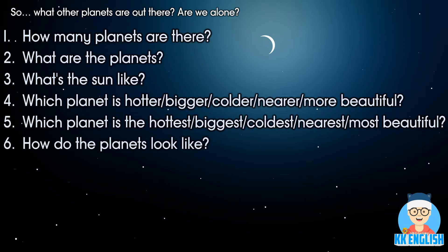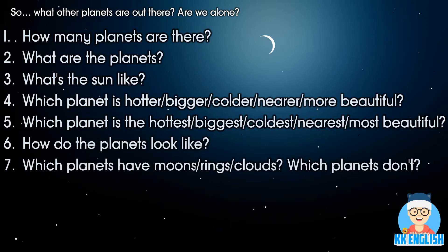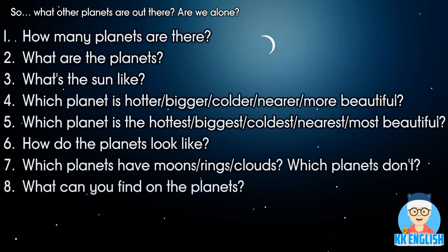Number seven: Which planets have moons? Which planets have rings? Which planets have clouds? And which planets don't have any of these? Number eight: What can you find on the planets? What exists on these imaginary worlds you've created?